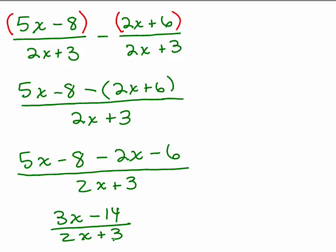I can just combine like terms. So I have 3x minus 14 over 2x plus 3. Now we want to know if that's reduced, so we see if we can factor the numerator or the denominator. No, there's no common factor, it's not a difference of 2 squares, not a sum or difference of 2 cubes, so that's as far as we can go and that is the answer to this problem.